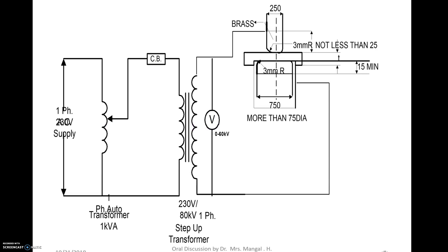For this experiment, the test setup required for solid material testing and development of tracks is the same. The general circuit diagram of HV testing requires an autotransformer — you give normal supply available in the lab, single phase 230 volt AC supply. That autotransformer output you will connect to the primary side of the high voltage transformer through a circuit breaker. Then the secondary of the high voltage transformer you will connect to the electrodes. In this experiment, electrodes can be Robosky electrodes or flat electrodes.